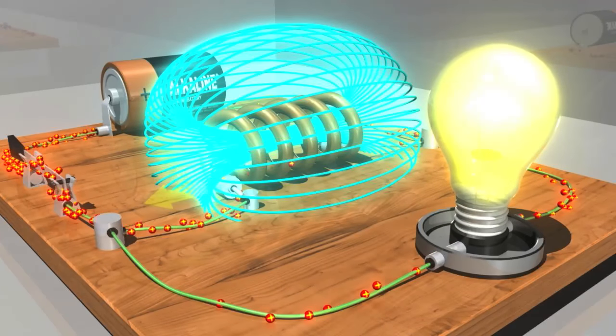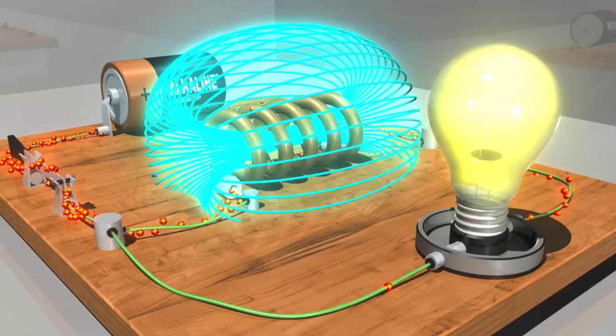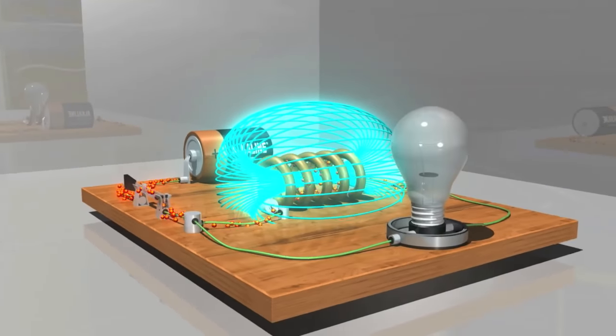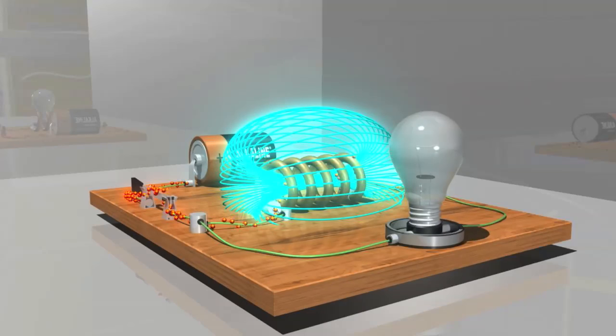Once the magnetic field around the inductor reaches its maximum field, the back EMF fades and the current now favors the path through the inductor because the bulb creates some resistance to the current.